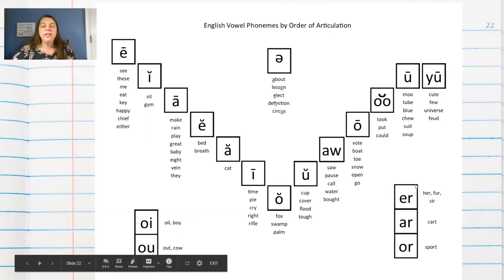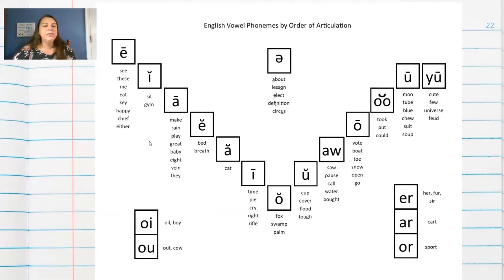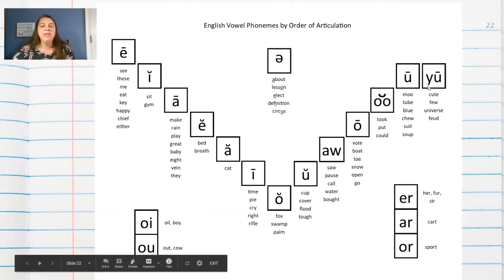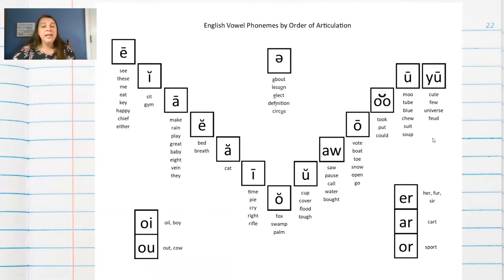Then we have our R controlled vowels over here: er, ar, or. And then over here we have oi and ou. Now you'll notice that I have lots of different words underneath each of these to illustrate the different spellings that we could have for all of these sounds.